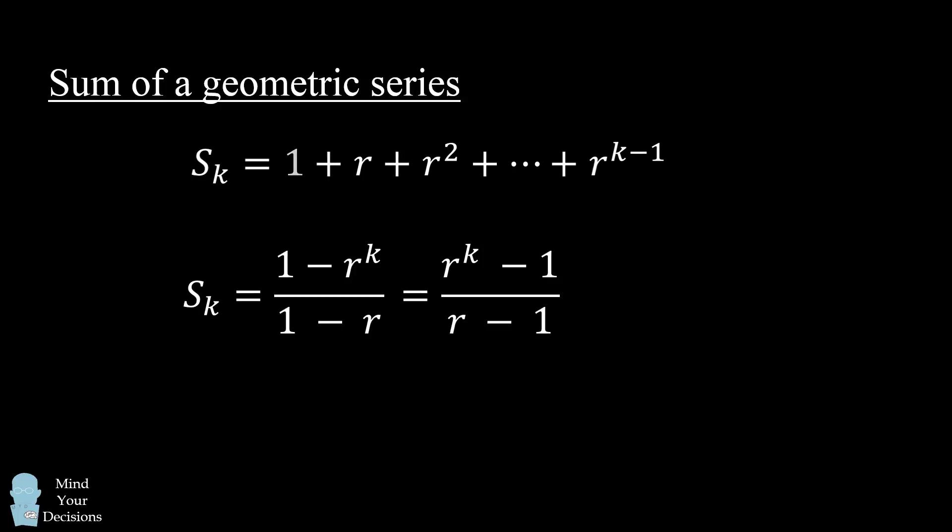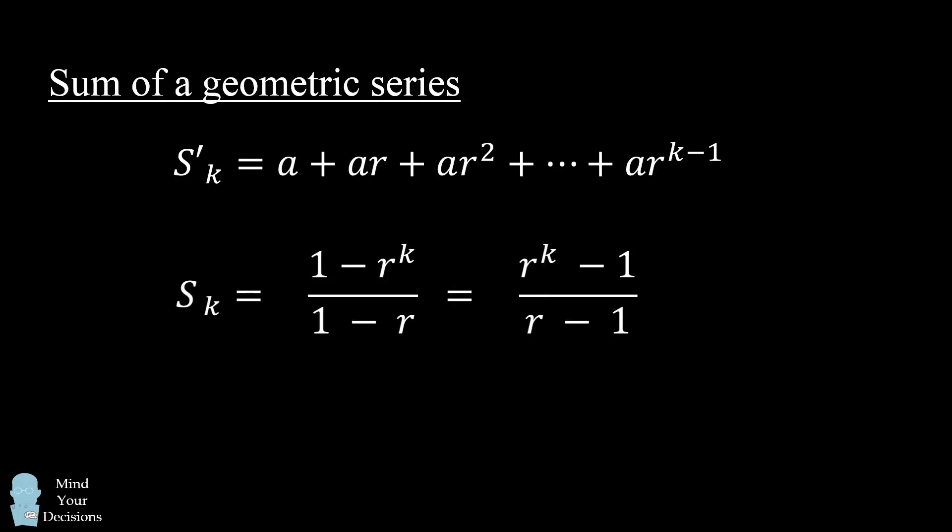Let's suppose we have a geometric series that starts out with some other term a. We then essentially multiply each term by a, so that we'll also multiply our sum by a. So these would be our formulas if our geometric series started out with the term a.